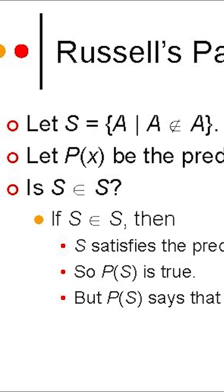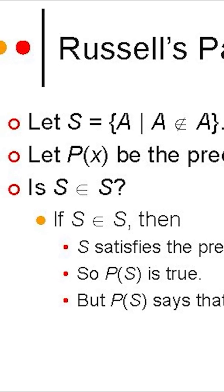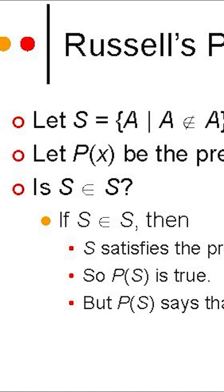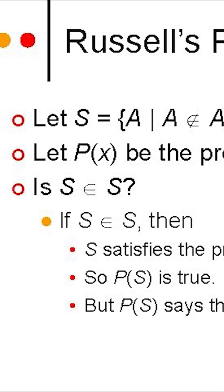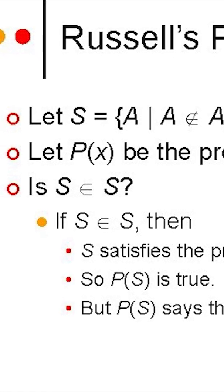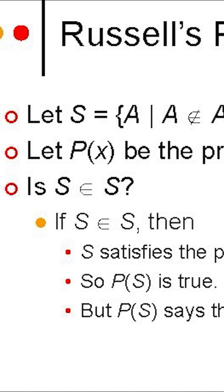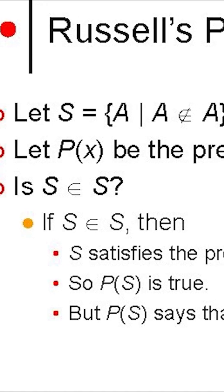At first glance, mathematics seems like the purest form of truth, rigid, logical, and precise. But in 1901, British philosopher and logician Bertrand Russell exposed a hidden crack in that perfection with what is now famously known as Russell's Paradox.